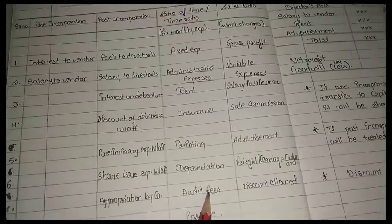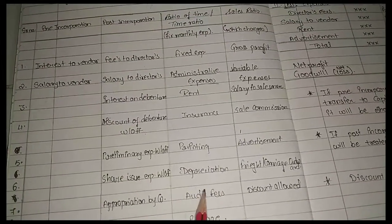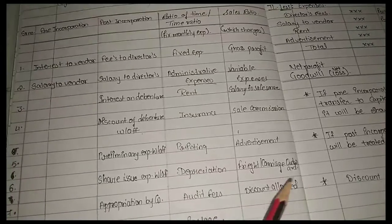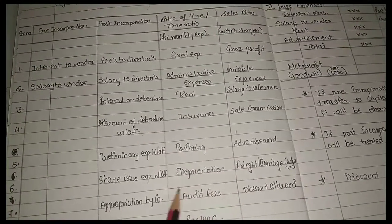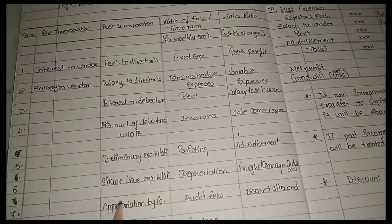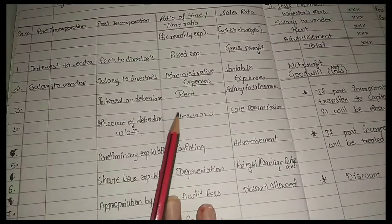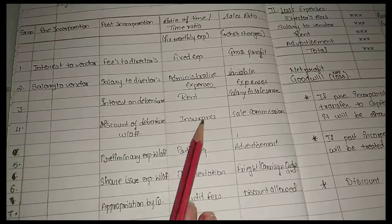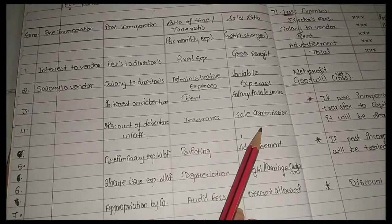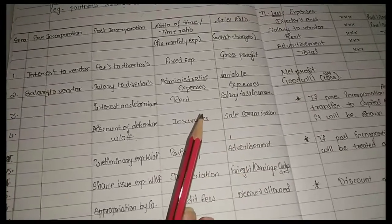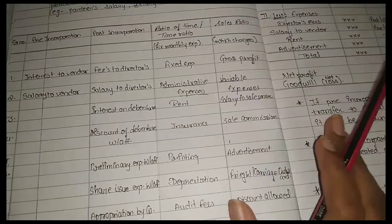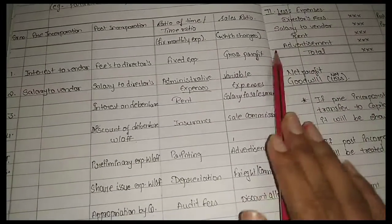Audit fees, postage - audit fees always depends on your sentence or adjustment, that time it will not go in time ratio. Postage, rent, insurance premium paid, all fixed expenses.